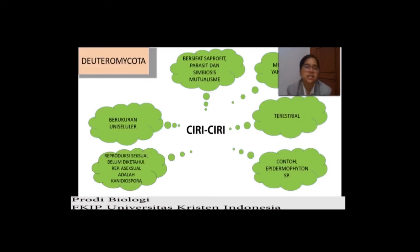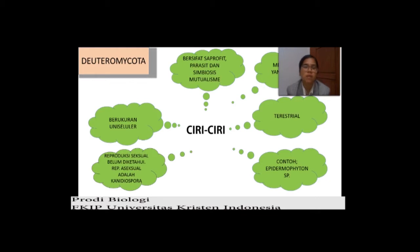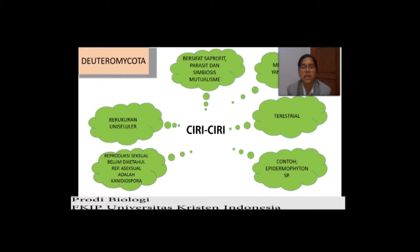Yang terakhir, Deuteromycota. Sudah Zygomycota, Ascomycota, Basidiomycota, sekarang Deuteromycota. Deuteromycota ini sebenarnya merupakan jamur yang belum sempurna — dikatakan belum sempurna karena Deuteromycota ini belum diketahui bagaimana reproduksi seksualnya. Cara hidupnya sudah diketahui: ada yang saprofit, ada yang parasit, dan simbiosis mutualisme. Memiliki hifa yang bersekat, terestrial, berukuran uniseluler. Reproduksi aseksualnya adalah konidiospora. Contohnya adalah Epidermophyton SP.